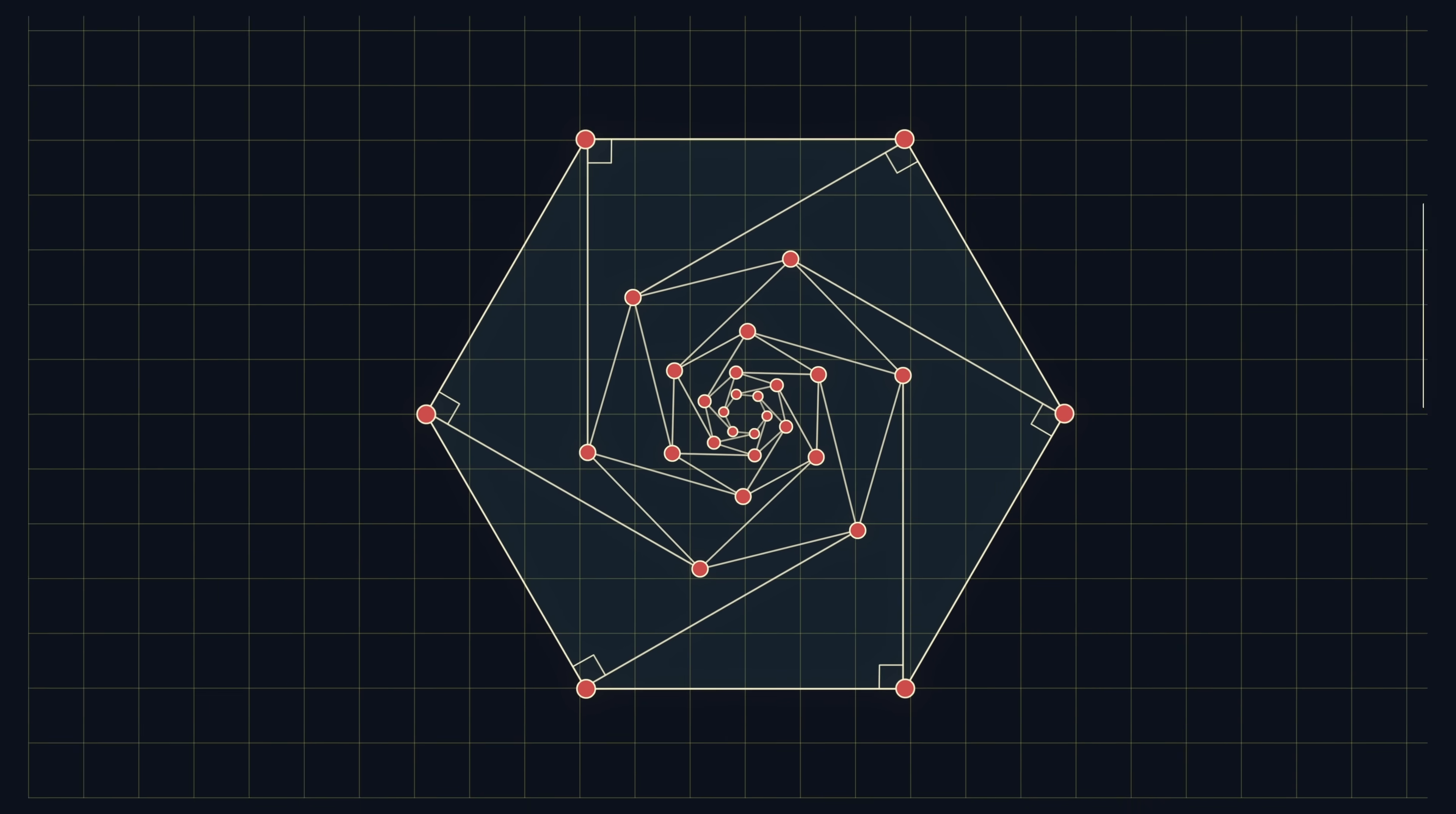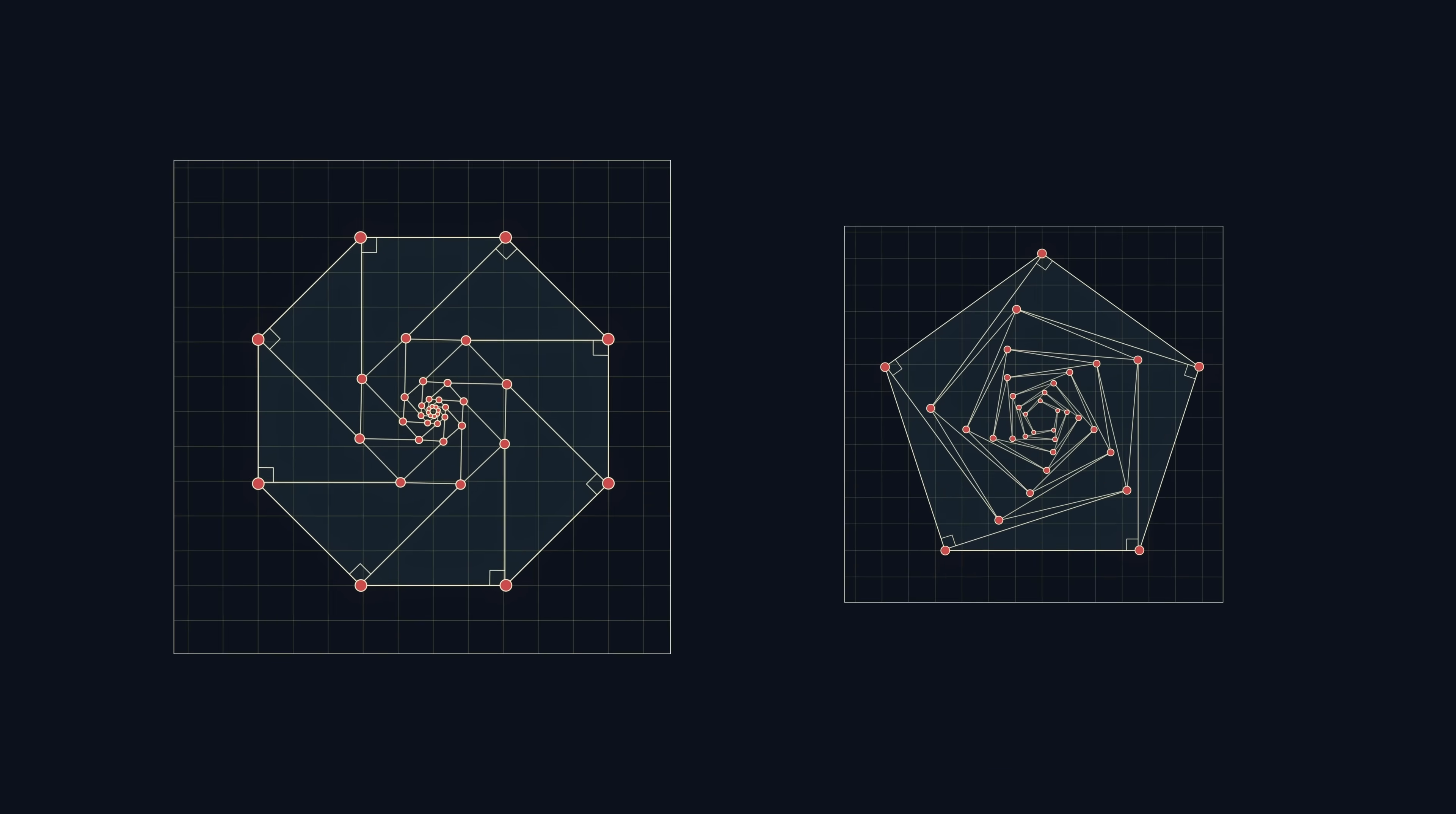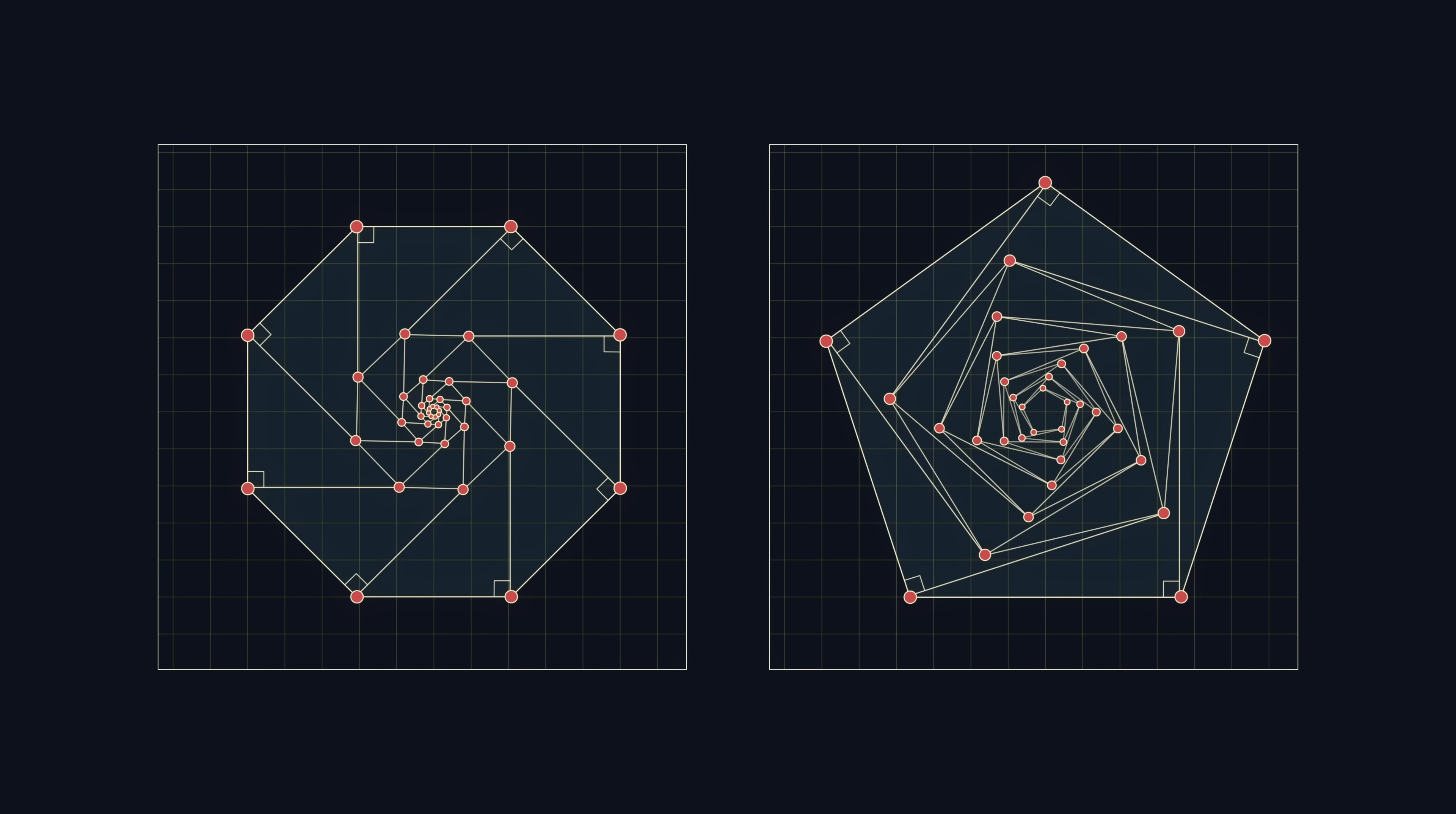Not only is this proof much shorter than any of the other ones, but it provides a real visual meaning for why all regular polygons, other than the square, are, in a sense, irrational.